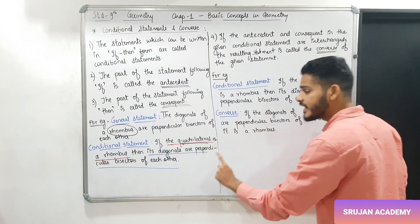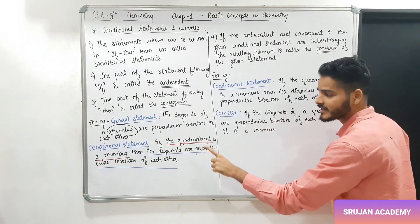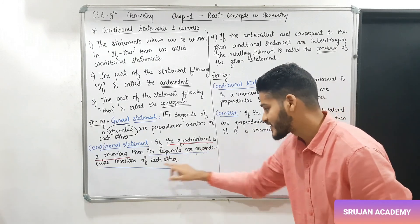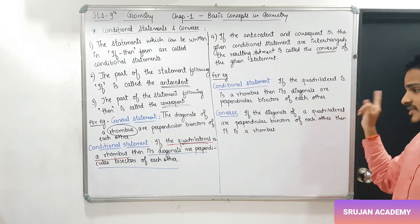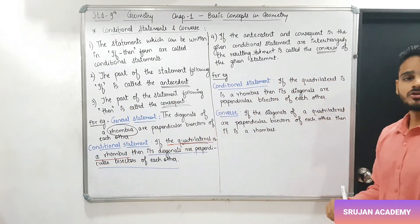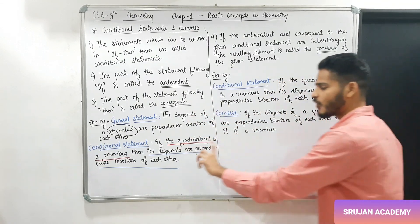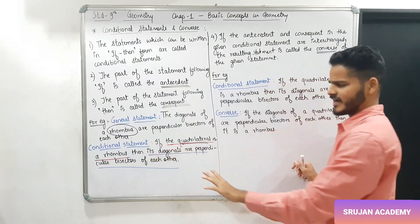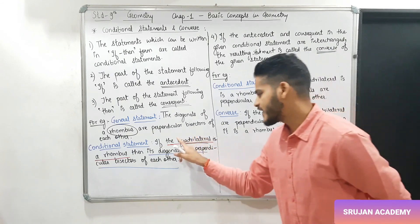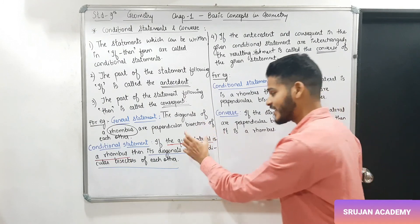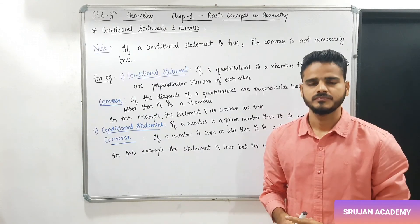तो अब देखो converse कैसे आएगा. If the diagonals of a quadrilateral are perpendicular bisectors of each other, then it is a rhombus. देखो, antecedent को consequent बना दिया. तो आपको क्या करना है — जो consequent था उसको antecedent में बदलना है, antecedent को consequent में. जब आप consequent को antecedent में बदल रहे हो, तो वहाँ पर जो भी pronoun रहेगा उसकी जगह उसके family का नाम आ जाता है — quadrilateral. और consequent में है: then it is a rhombus.